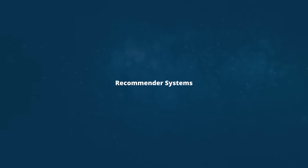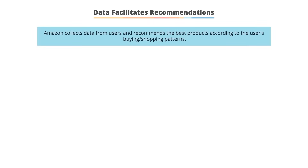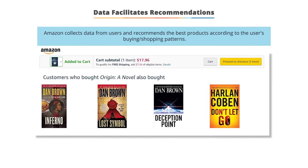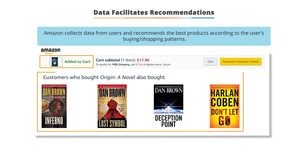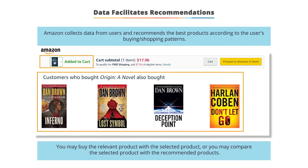Recommendation systems are used by many e-commerce companies. Amazon collects data from users and recommends the best product according to the user's buying or shopping pattern. For example, when you search for a specific product and add it to your cart, Amazon recommends relevant products based on your past shopping and searching pattern, so you may also buy a relevant product along with your selected one.